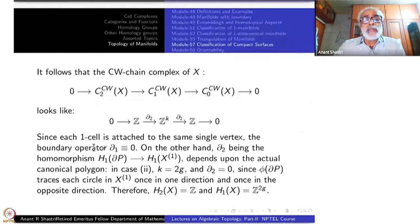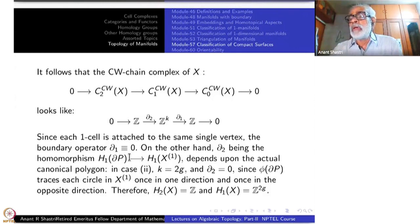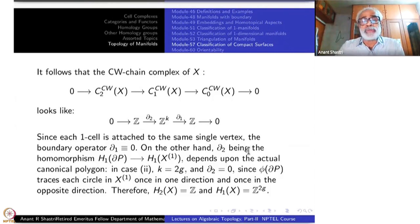Since each 1-cell is attached to the same single vertex, the boundary operator ∂₁ sends each generator to V₀ minus V₁. But both V₀ and V₁ go to the same vertex U₀, so it is U₀ minus U₀ = 0. Therefore ∂₁ is 0 on each generator, and the boundary map ∂₁ is identically zero. For ∂₂, this is a homomorphism from H₁ of the boundary of P to H₁ of the bouquet of circles X₁, which is Z^K generated by each circle.